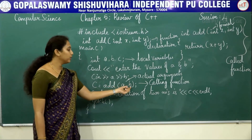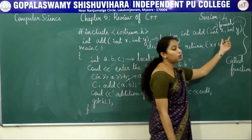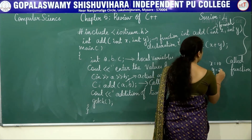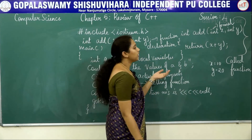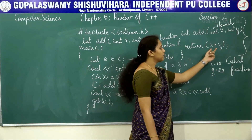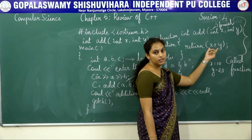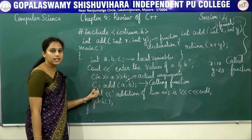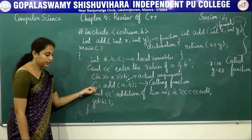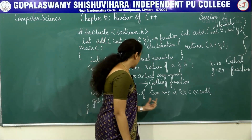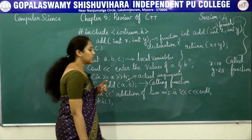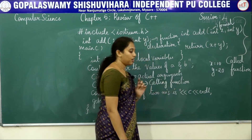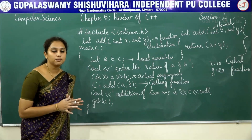Suppose the value of a is 10 and the value of b is 20. Those values are transferred to x and y respectively, so x becomes 10 and y becomes 20. We then perform addition: x + y. After performing the addition, the value is transferred with the help of a return statement and is received by the variable c. The next statement prints the addition of the two numbers as c. Since 10 + 20 = 30, the value of c is 30. This is how we write a program using a function.